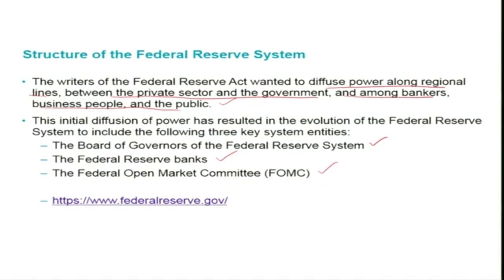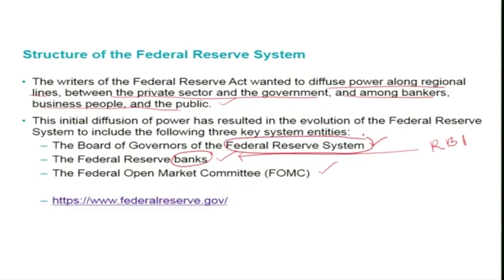Unlike India's central bank — the Reserve Bank of India — where there is essentially one centralized institution, in the US there is no single central bank as such. Instead, there are groups of regional central banks called Federal Reserve Banks. Because of that, the entire central banking apparatus is called the Federal Reserve System, not a single central bank. The Federal Open Market Committee was also set up as part of the Federal Reserve System to conduct open market operations in order to attain monetary policy targets.